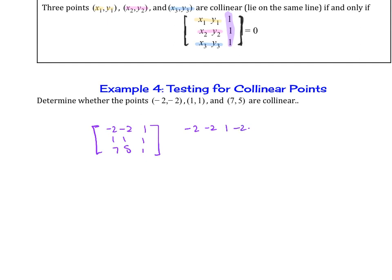So negative 2, negative 2, 1, negative 2, negative 2, 1, 1, 1, 1, 1, 7, 5, 1, 7, 5. So I'm doing the diagonal method, and so I'm going to multiply those, add those products together, and then I'm going to subtract these products. So then we get negative 2, so negative 2 times 1 times 1 plus negative 2 times 1 times 7 plus 1 times 1 times 5.